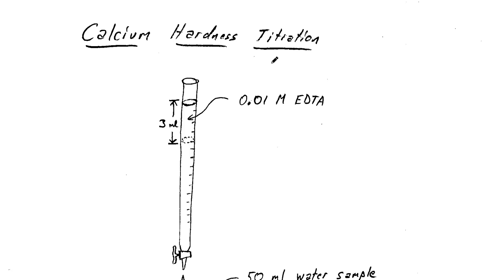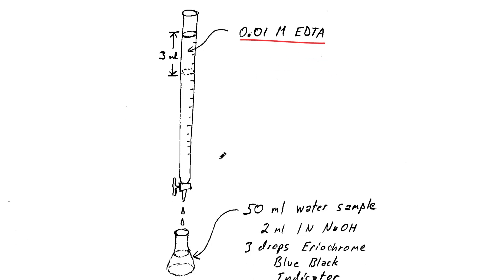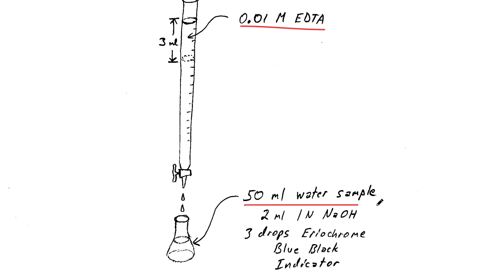There's a quick and dirty approach for measuring calcium hardness, and we do it with a titration method using 0.01 molar EDTA in a burette, dropping it into a 50 milliliter water sample that is basic because of some sodium hydroxide that we've added.